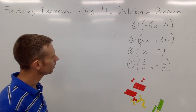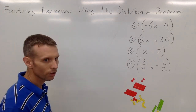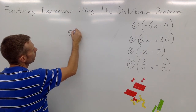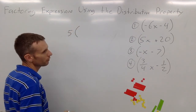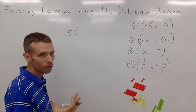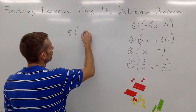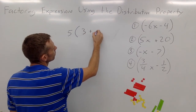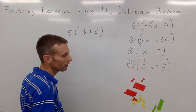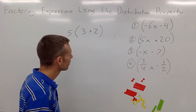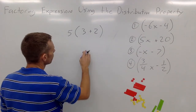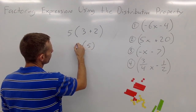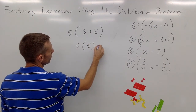To start with, let's recall a little bit about the distributive property. If I had five times — I'm going to use numbers for a second just to visualize — five times three plus two. Well, we can do three plus two is five and then five times five is 25.